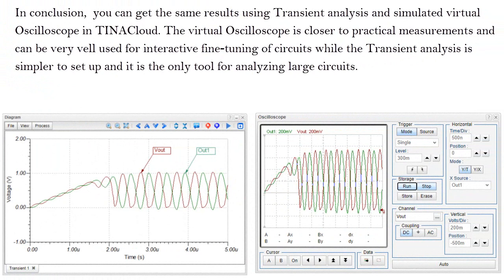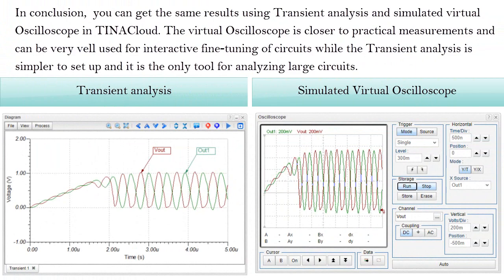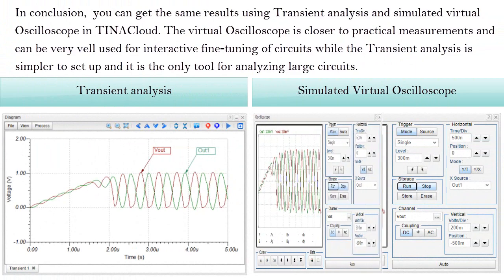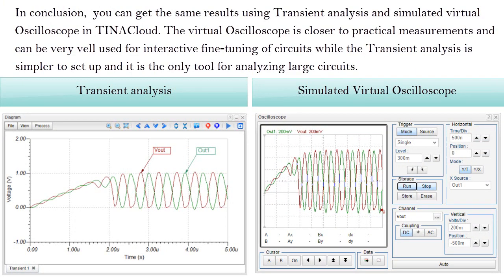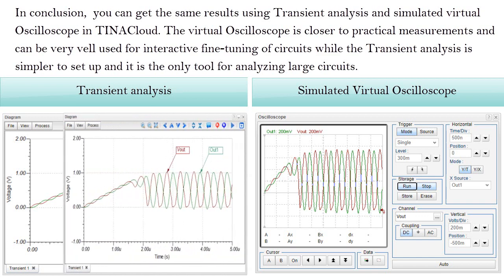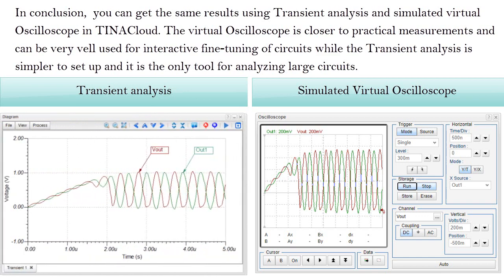In conclusion, you can get the same results using transient analysis and simulated virtual oscilloscope in TinaCloud. The virtual oscilloscope is closer to practical measurements and can be very well used for interactive fine-tuning of circuits, while the transient analysis is simpler to set up and it is the only tool for analyzing large circuits.